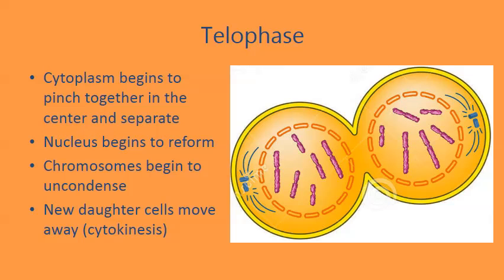In telophase, the last of the four major phases of mitosis, the cytoplasm begins to pinch together on the outside of the cell. The nucleus begins to reform, and the chromosomes begin to unwind back into chromatin. The new daughter cells take shape, and the cell membrane will completely separate during cytokinesis, giving us two brand new daughter cells where we had one before.